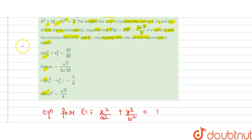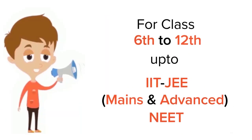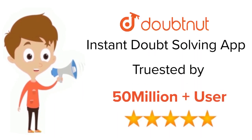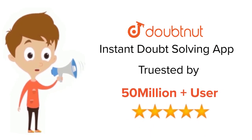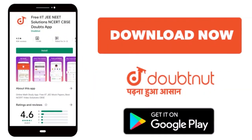So, e1² + e2² = 43/40 and e1 × e2 = √7 / (2√10). We check which options are correct based on these values. Thank you. For Class 6 to 12, IIT and NEET level, trusted by more than 5 crore students — download DoubtNet app today.